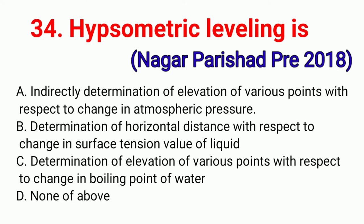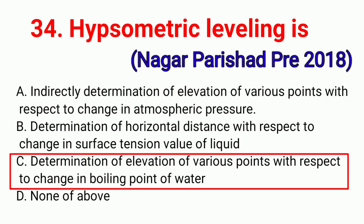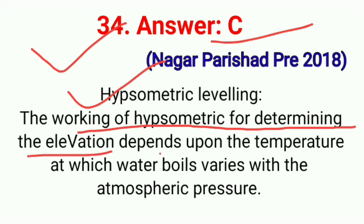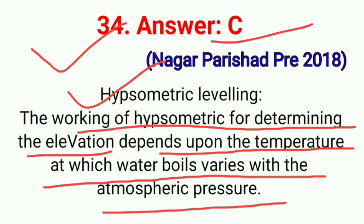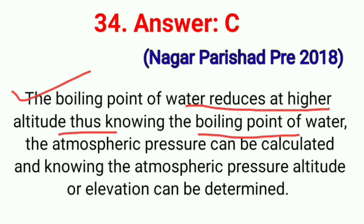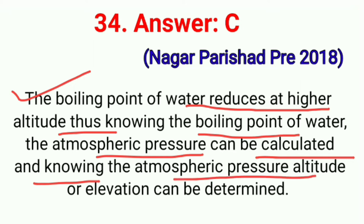Question No. 34. Hypsometric leveling is — correct option C: Determination of elevation of various points with respect to change in boiling point of water. Hypsometric leveling determines elevation based on the principle that the temperature at which water boils varies with atmospheric pressure. The boiling point of water reduces at a higher altitude; knowing the boiling point, atmospheric pressure can be calculated, and knowing atmospheric pressure, altitude or elevation can be determined. Correct option C.